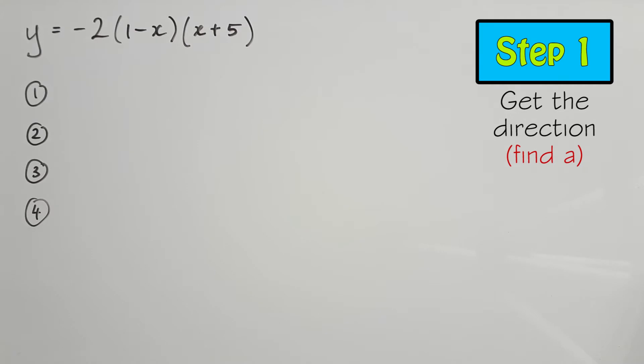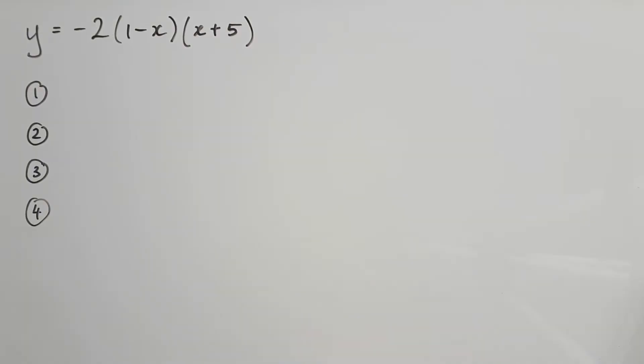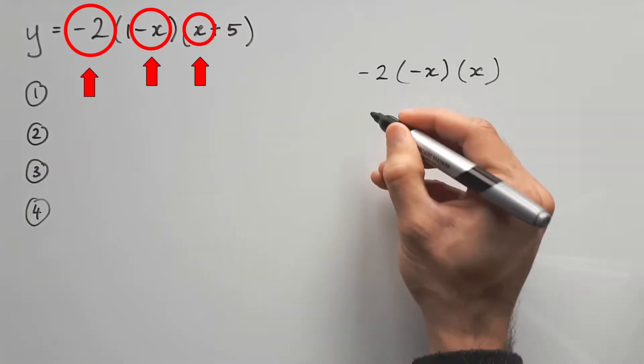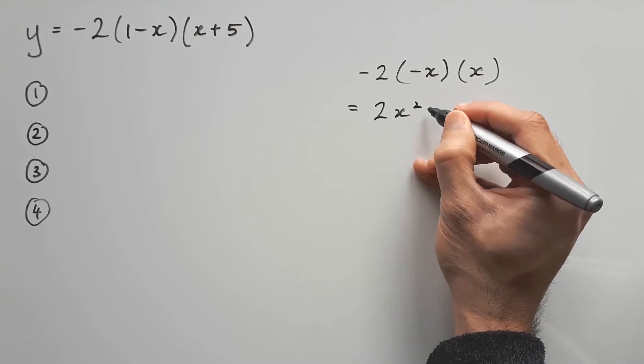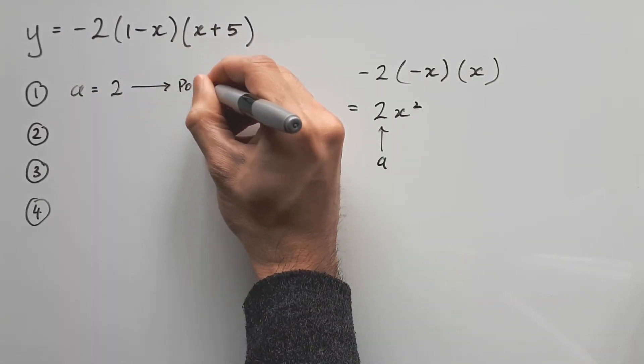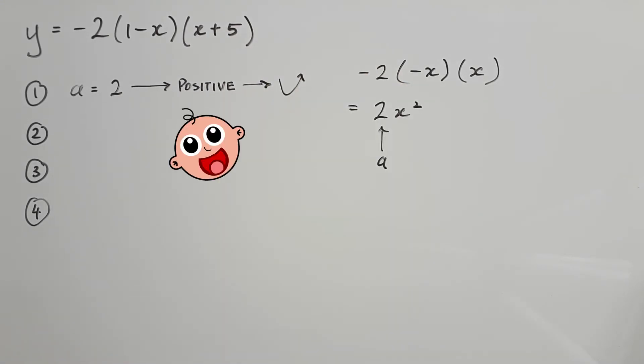Step 1: Calculate the a value for the final direction. It's not as obvious as you might think. What you need to do is grab the factor outside and multiply it by the x-terms on the inside. Now that we have 2x squared, we can see that the a value is actually 2, which is positive. So the graph finishes upwards, which is a smiley face.